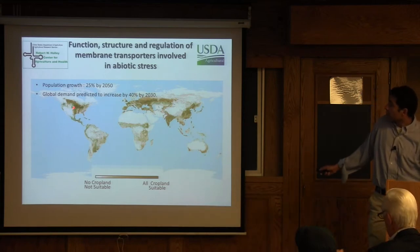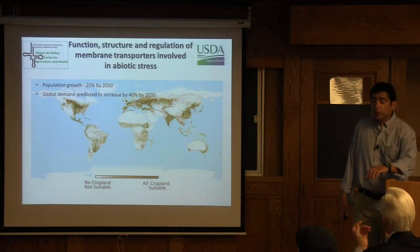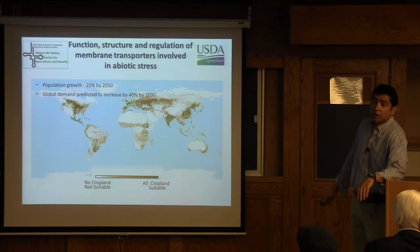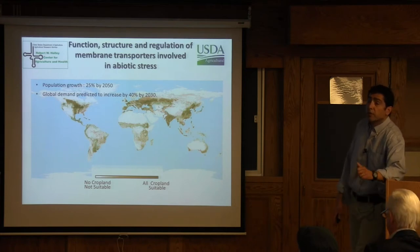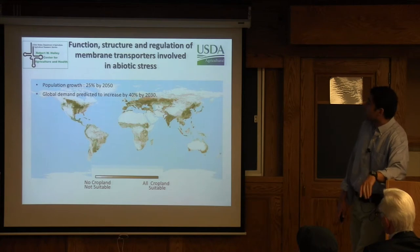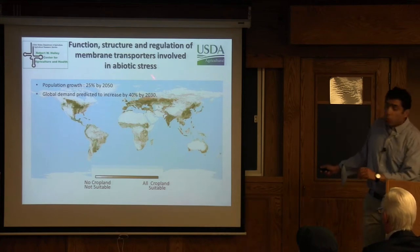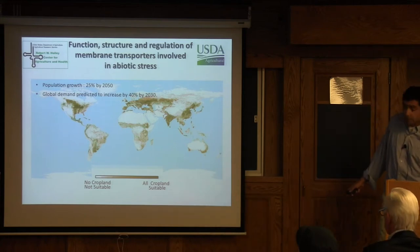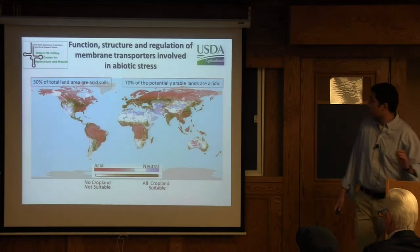These marginal soils are a result of several abiotic stresses including drought, salinity, and also aluminum toxicity. To tell you why aluminum toxicity is such an important abiotic stress, I'll first overlap a heat map describing the pH of the soils around the world.